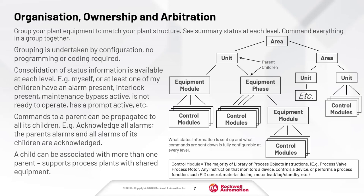So an area can contain another area, it can contain a unit, it can contain an equipment phase, for example. The diagram shows you what is a parent and what is a child in this structure. The control modules are the majority of the Library of Process Objects instructions - for example, the process valve, the process motor - any instruction that monitors or controls a device, or performs a process function such as PID control, material dosing, or motor lead-lag-standby control.